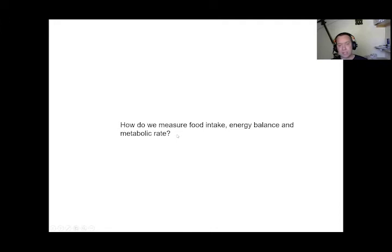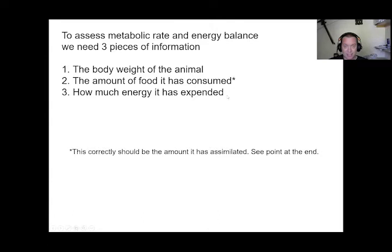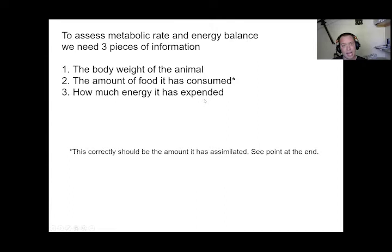To assess metabolic rate and energy balance, we need three pieces of information: the body weight of the animal, the amount of food it has consumed, and how much energy it has expended. For metabolic rate, we need two of these — body weight and either food consumed or energy expended. It is actually possible to calculate metabolic rate without a calorimeter just by measuring food intake well. For energy balance, we need food consumed and energy expended, then subtract one from the other.